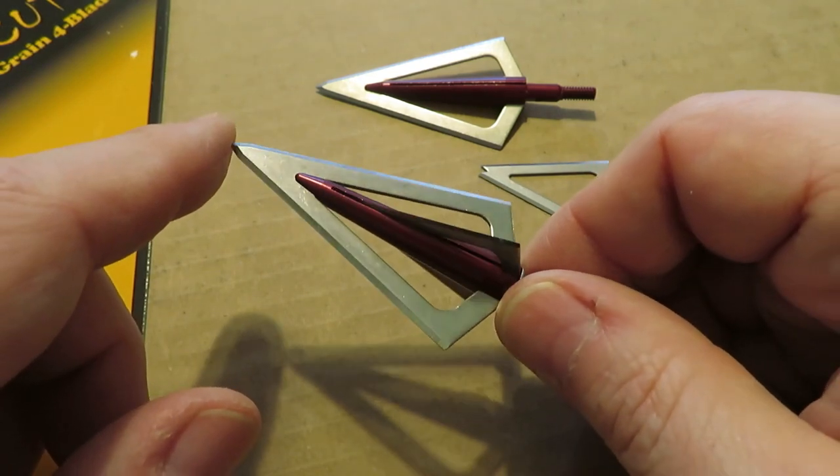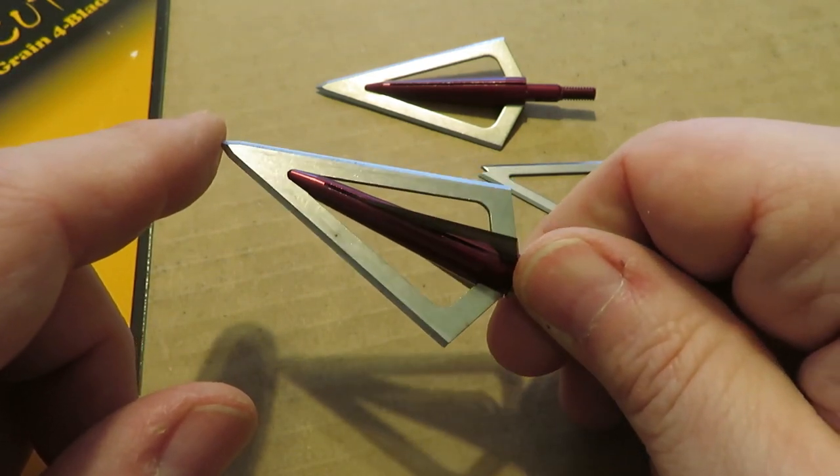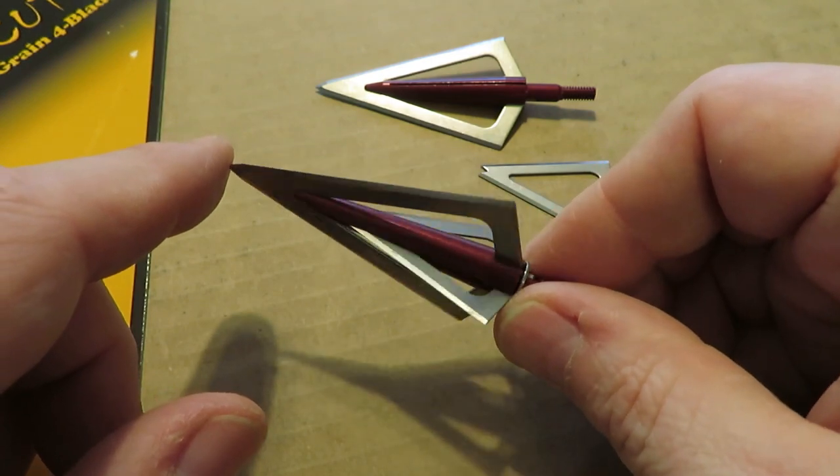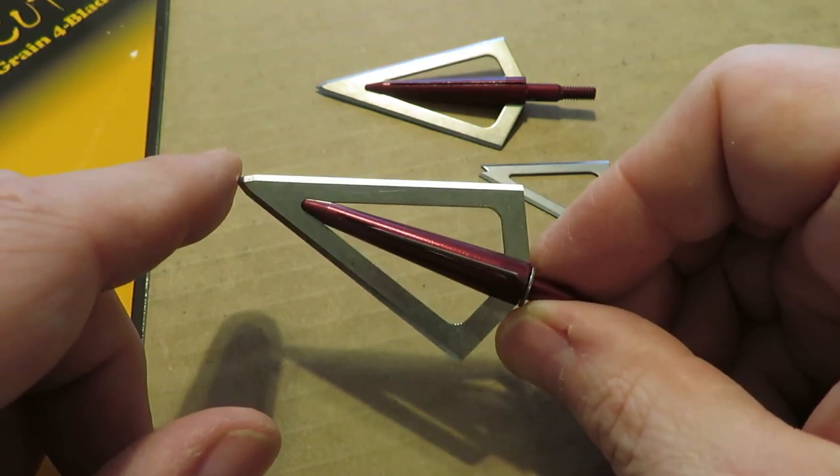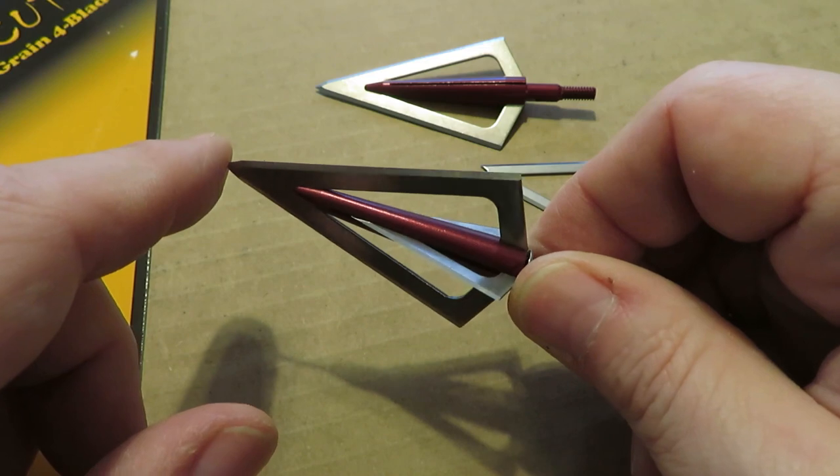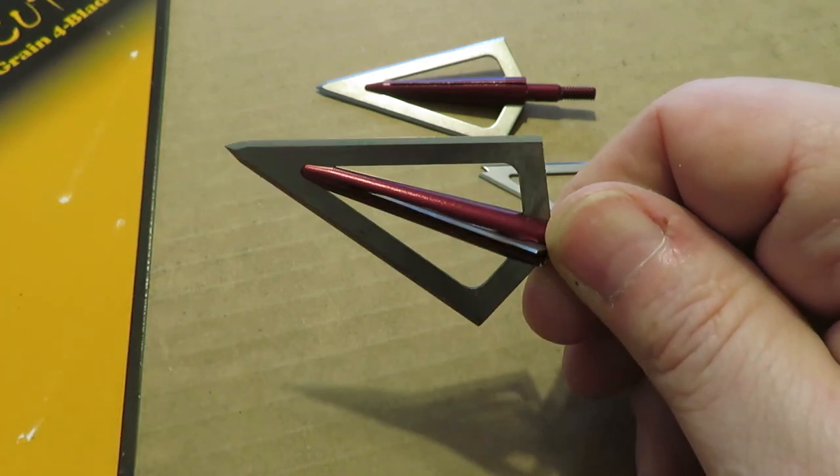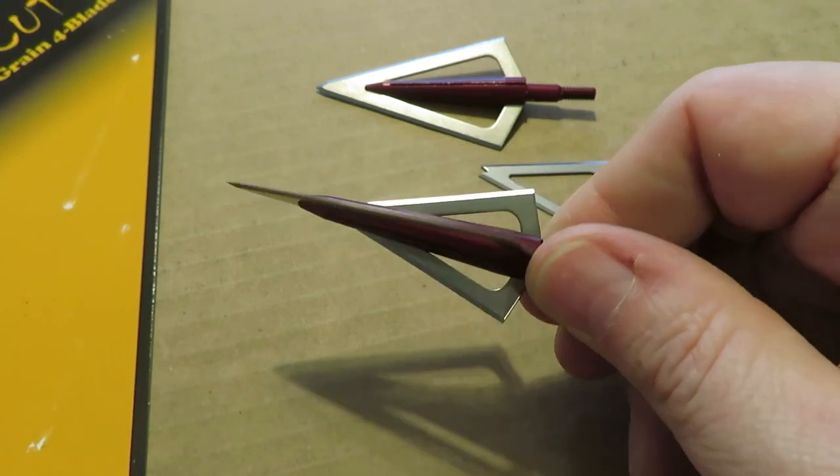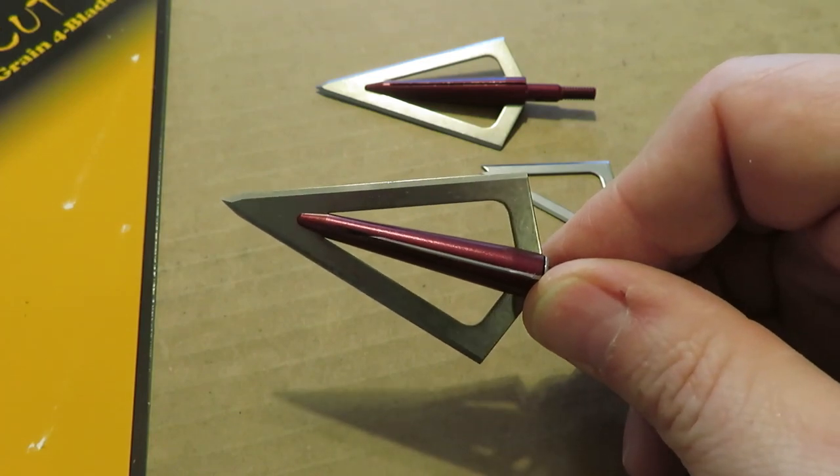We're going to use the same protocol we use with every head. We're going to check out-of-the-box sharpness, look at them under the microscope, and then come up with a sharpening regimen for them. Let's start by looking at the factory edge under the microscope.